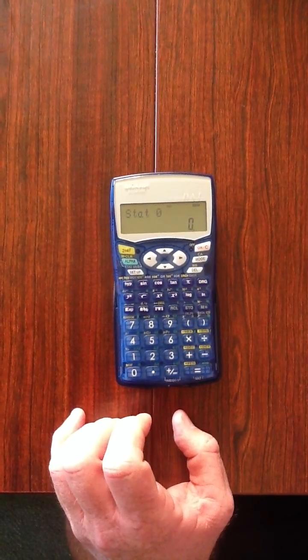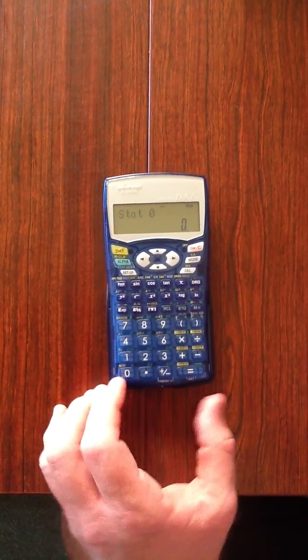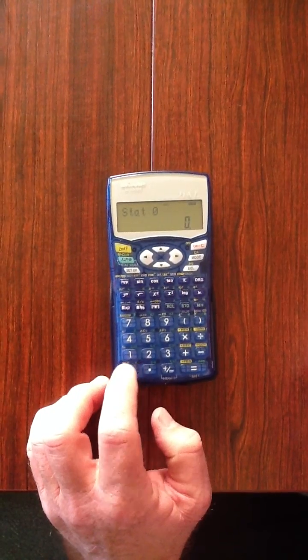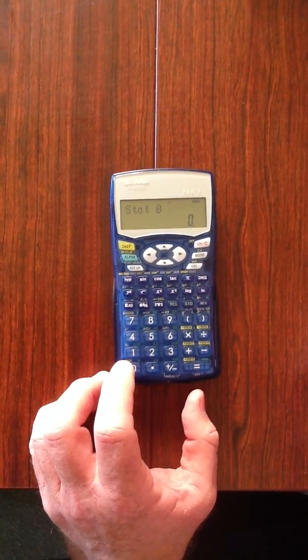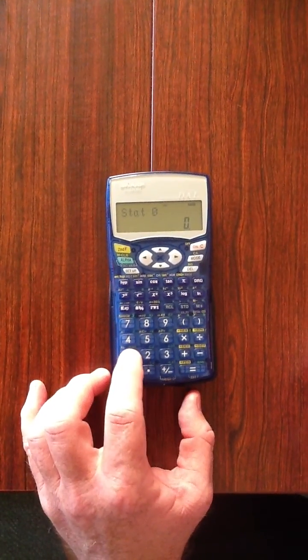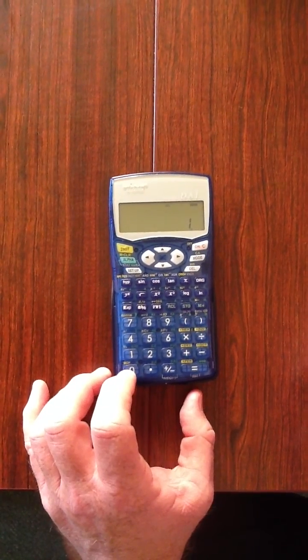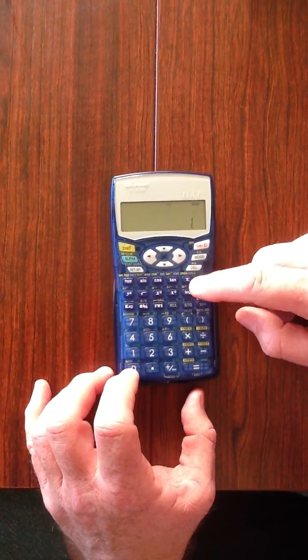Now to enter our data, let's say the first score is one and there are two scores of one. We press one, that's our score, then we press STO,